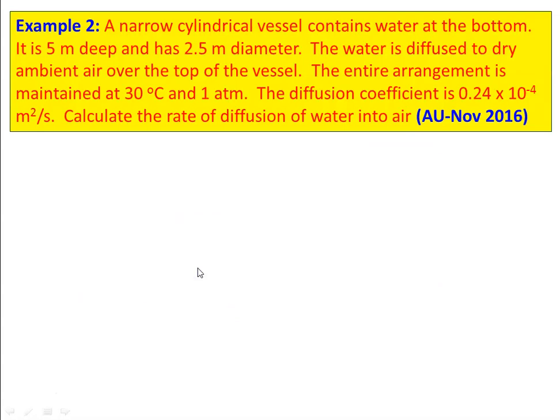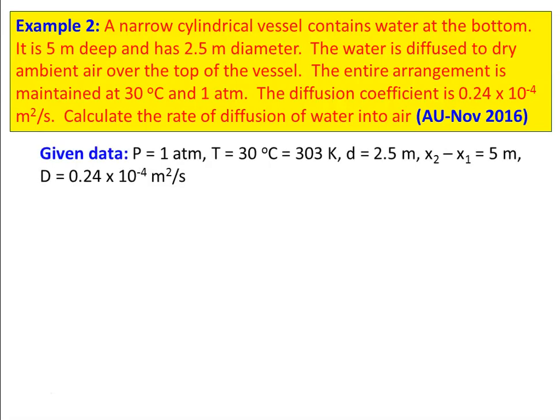We take another example from November 2016 question paper. A narrow cylindrical vessel contains water at the bottom. It is 5 meter deep and 2.5 meter diameter. The water is diffused to dry ambient air over the top of the vessel. The entire arrangement is maintained at 30 degree Celsius and 1 atmosphere. The diffusion coefficient is 0.24 into 10 power minus 4 meter square per second. Calculate the rate of diffusion of water into air. This is a similar type of problem with different numerical data.